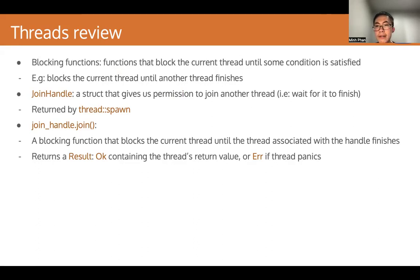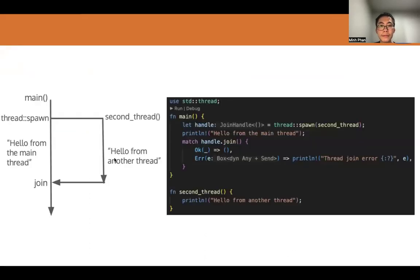The join method is a blocking function that blocks the current thread until the thread associated with the handle finishes. This method returns a Result — either an Ok variant that contains the thread's return value, or an Err variant if the thread panics. Here is an example of spawning and then joining a thread, where we spawn a thread associated with the second thread function, do some work in the main thread, and then wait for that other thread to finish.